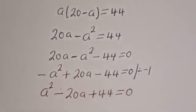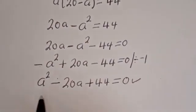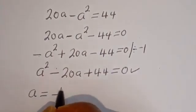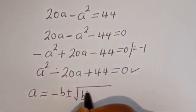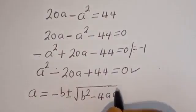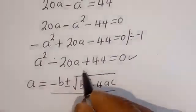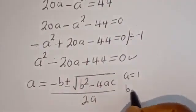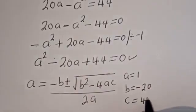This is a quadratic equation, which can be solved using the quadratic general formula: a equals negative b plus or minus square root of b squared minus 4ac, all divided by 2a. From our equation, the coefficient a equals 1, b equals negative 20, and c equals 44.